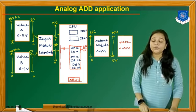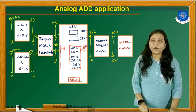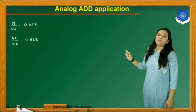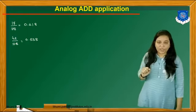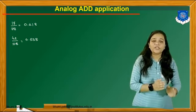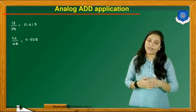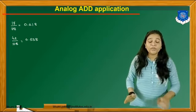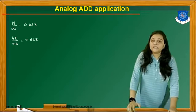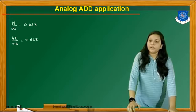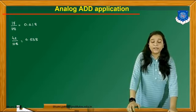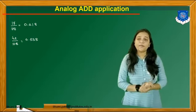The meter connected at the output side has a range of 0 to 10 volts. Now we test with value A equal to 17 and value B equal to 42. First, we divide the given value by the maximum value. The maximum value is 78, so we take 17 divided by 78, which equals 0.218. Again, value B is 42, so 42 divided by 78 equals 0.538.